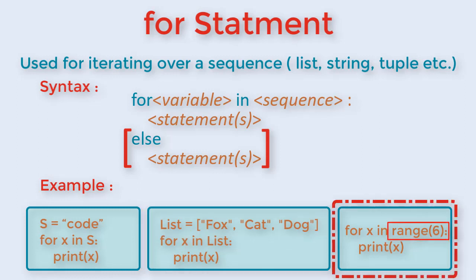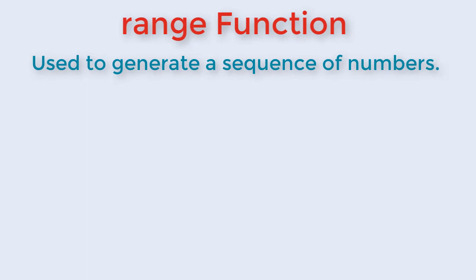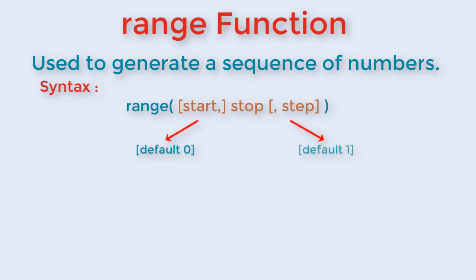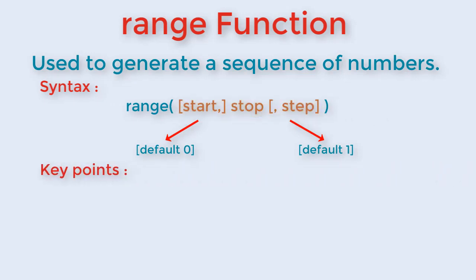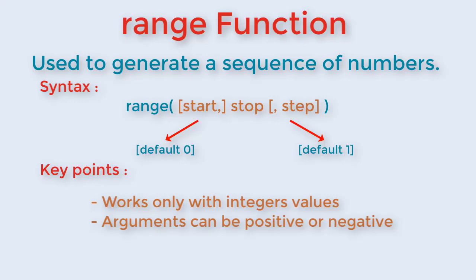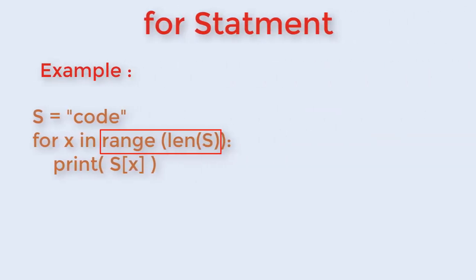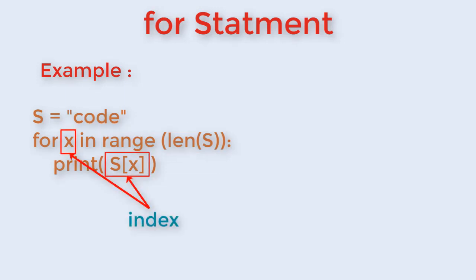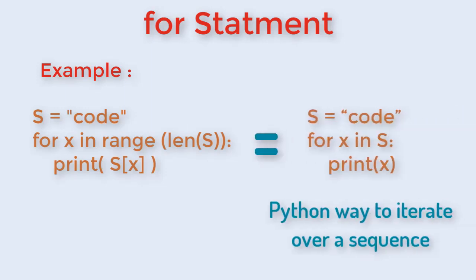The third method is to use the range function. A quick review of range function: it is used to generate a sequence of numbers. It takes in three arguments, out of which two are optional. Some important points to note are that it works only with integer values, all three arguments can be positive or negative, and the step value must not be zero. We can use the range function as an index along with sequences. People familiar with Java or C++ arrays might find this more comfortable to use.